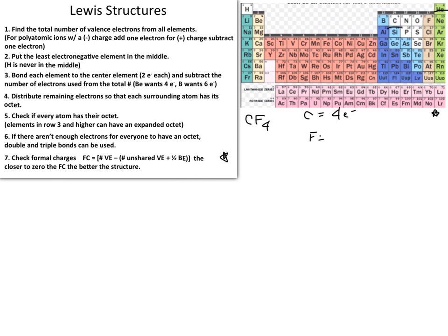Doing the same thing with fluorine, which has the same previous noble gas — helium — counting over: lithium, beryllium, boron, carbon, nitrogen, oxygen, and fluorine, we find that each fluorine atom has seven valence electrons.